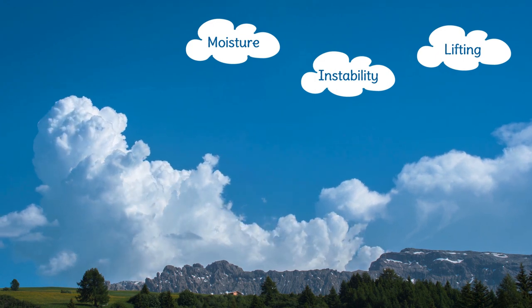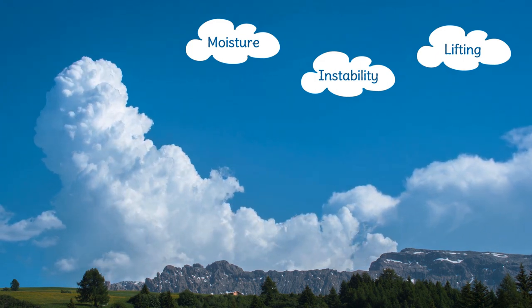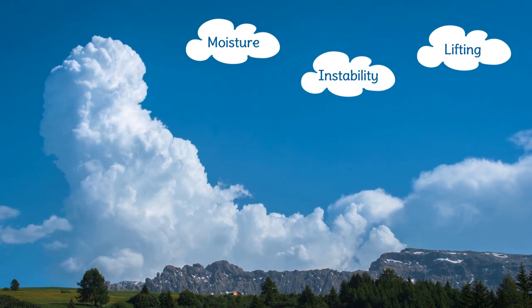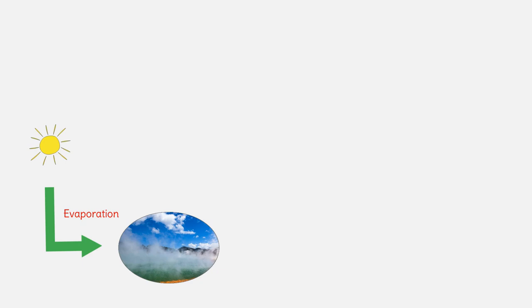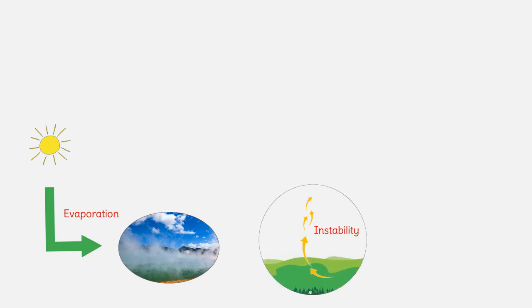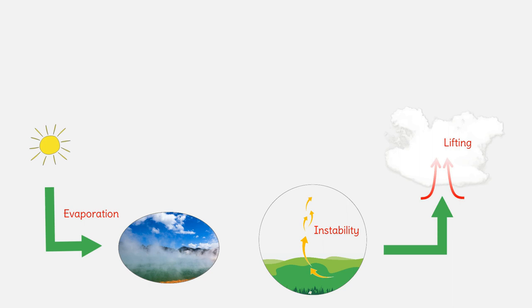Thunderstorms develop under different circumstances. On a sunny day, evaporation conveys an abundance of water into the troposphere. This moisture is needed to get precipitation. Atmospheric instability indicates a continuous rising of warm light air. The motion of warm air upwards is called lifting or convection, and it happens because of rising temperatures, weather fronts, or the presence of mountains.